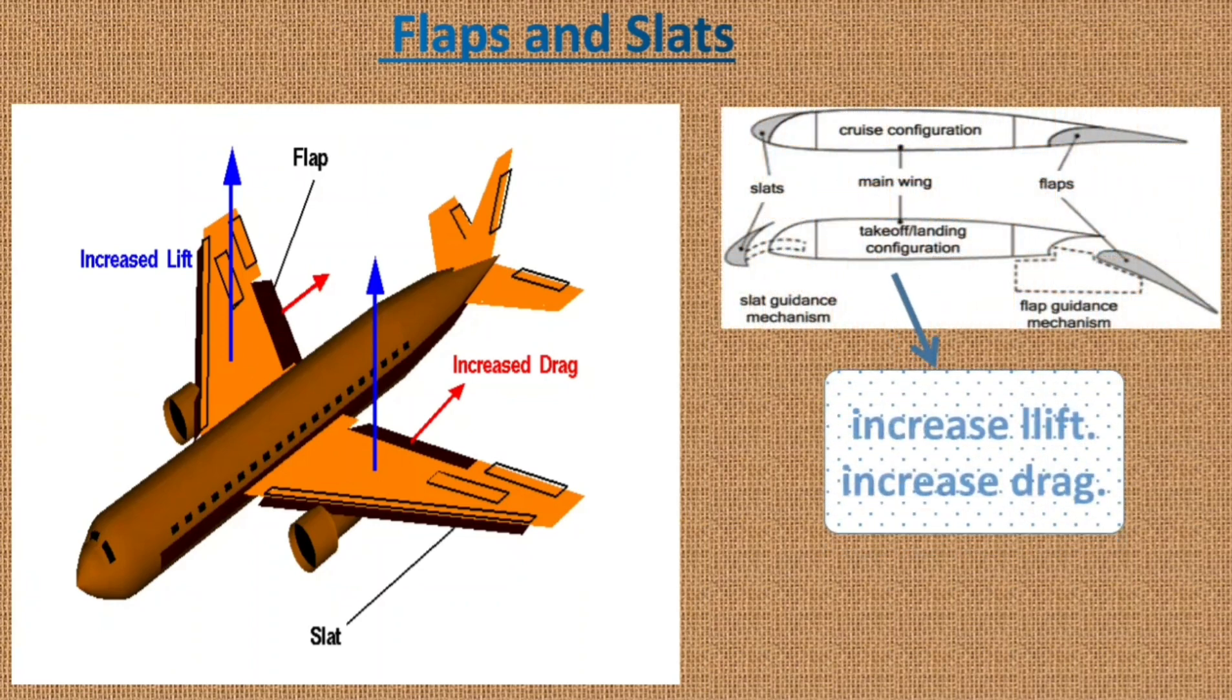As you can see in this picture, in cruise configuration, both the slats and flaps are fully retracted. In takeoff and landing configuration, the slats and flaps are extended. By this extension of slats and flaps, the camber of the wing is increased and hence the lift and drag produced by the wing is increased.